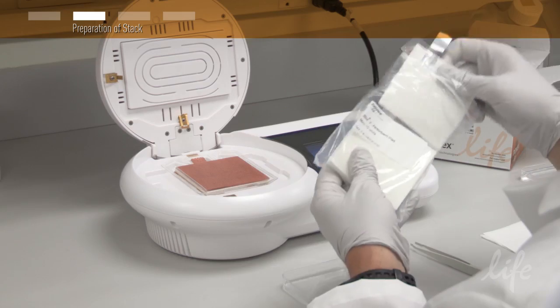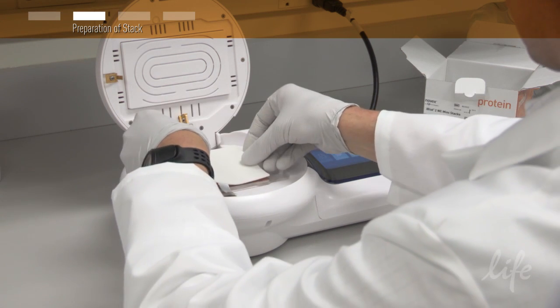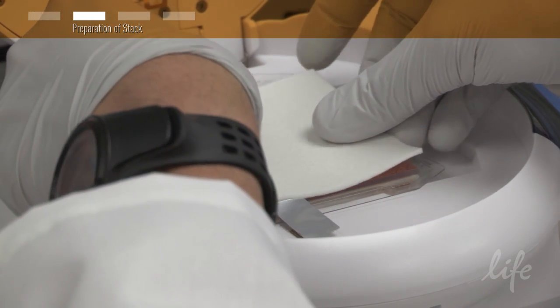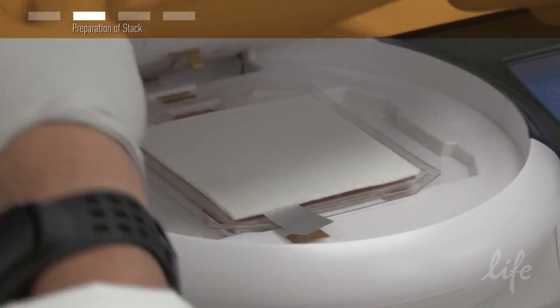Place the absorbent pad on top of the top stack and again, be sure that the electrical contacts are aligned with the corresponding contacts on the blotting surface. Then, close the lid.